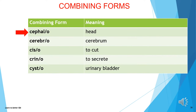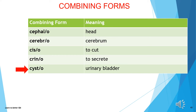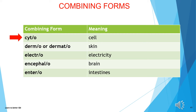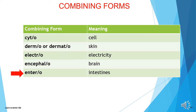Let's continue with the combining forms. Cephalo- means head. Cerebro- means cerebrum, as you just saw. Cis/o- means to cut. Crino- means to secrete, such as from a certain gland or glands. Cysto- means urinary bladder. Cyto- means cell. Derm/o- or dermat/o- means skin. Electro- means electricity. Encephalo- means brain. And entero- means intestines.